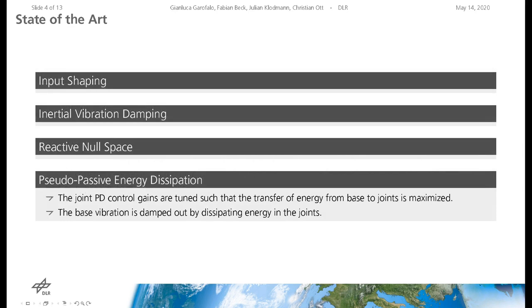In the pseudo-passive energy dissipation method, the joint PD control gains are tuned such that the transfer of energy from the base to the joints is maximized. The base vibrations are damped out by dissipating energy in the joints.